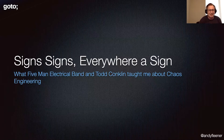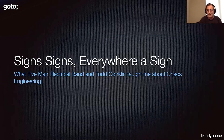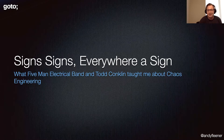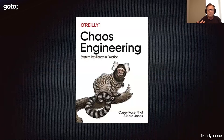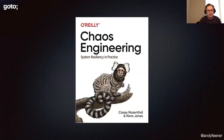The title of this presentation is 'Signs, Signs, Everywhere a Sign' — a reference to the Five Man Electrical Band, a fantastic Canadian dad rock band. Todd Conklin taught me about chaos engineering. I contribute a chapter to the O'Reilly chaos engineering book titled 'Humanistic Chaos,' and this talk is really based on a subsection of that chapter around signals.